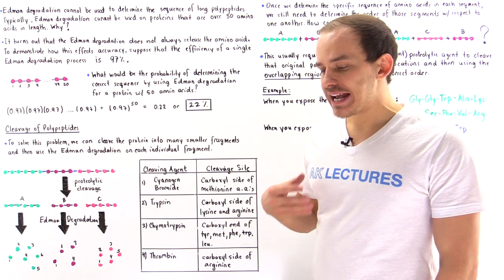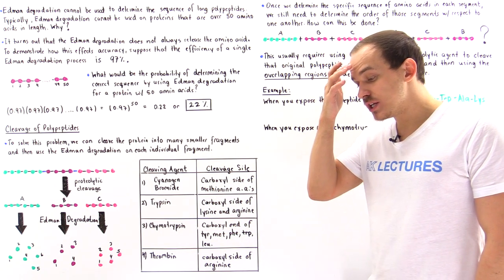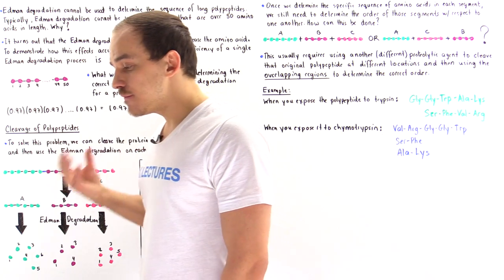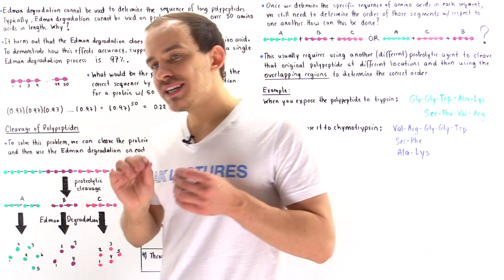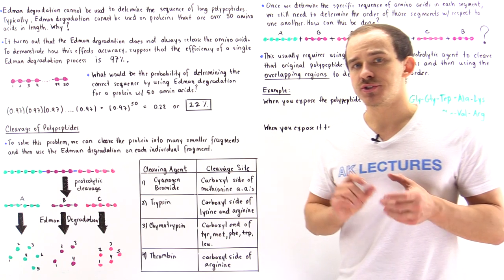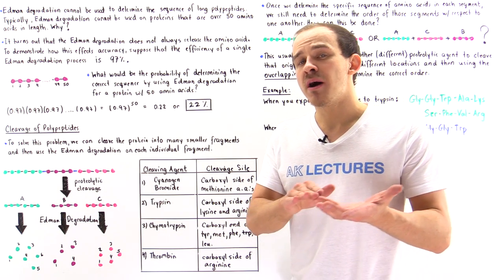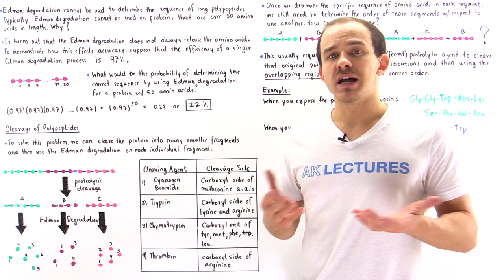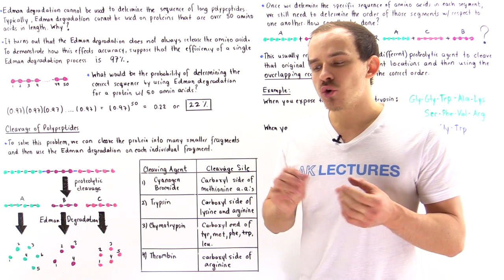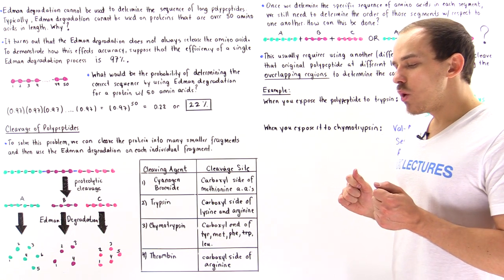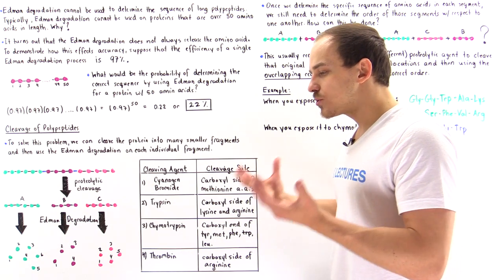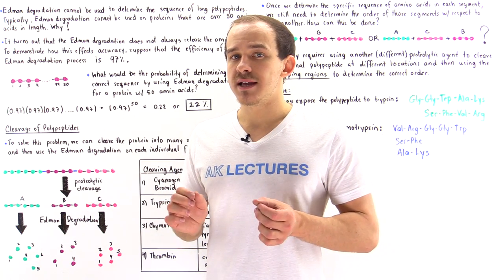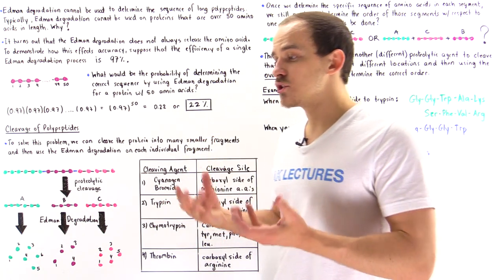Previously in our discussion on the Edman degradation process, we alluded to the fact that it has its limitations. Although it's a very useful process, we cannot use the Edman degradation under certain circumstances. The process is not perfect, and sometimes it does make a mistake — it does create an error.